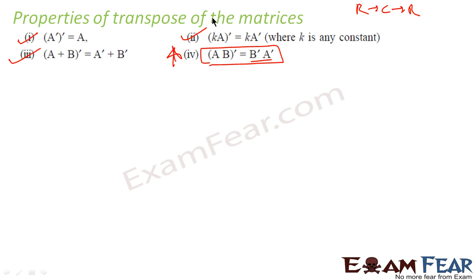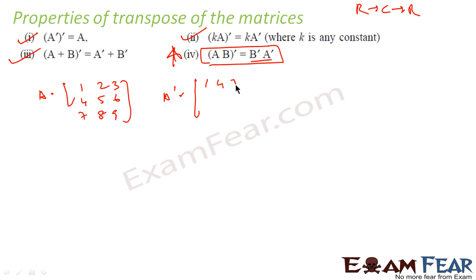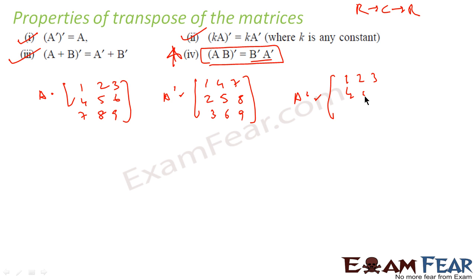To prove these, you can take any two matrices. For example, let A = [[1,2,3],[4,5,6],[7,8,9]]. Then A' = [[1,4,7],[2,5,8],[3,6,9]], and A'' (double transpose) = [[1,2,3],[4,5,6],[7,8,9]], which is exactly the same as A. You can similarly prove (A+B)' = A'+B' by taking two matrices, adding them, taking the transpose, and checking it equals the sum of individual transposes.